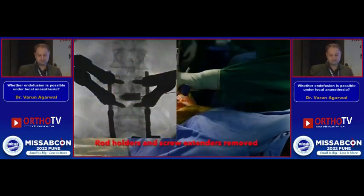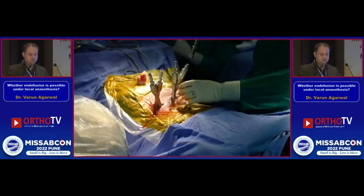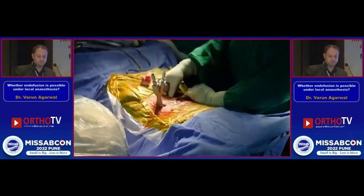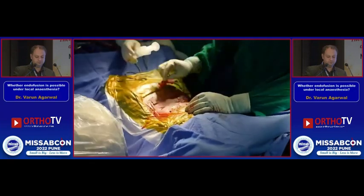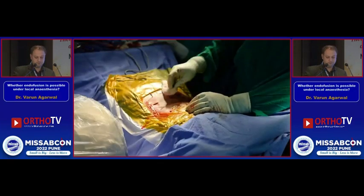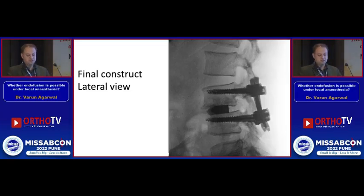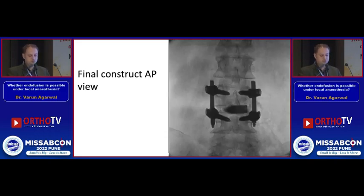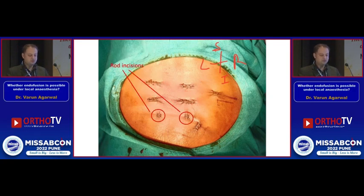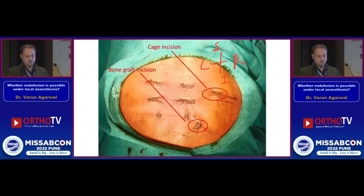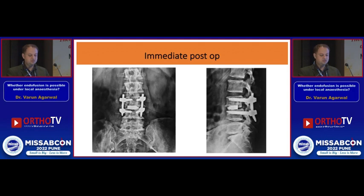This is how it looks under C-arm during the surgery. This is the final construct — you can see the graft is placed anteriorly to the cage as well. This is the AP view. These are the transverse incisions for cosmetic reasons taken for the screws, incisions for the rod insertion, the bone graft incision, and the cage incision.